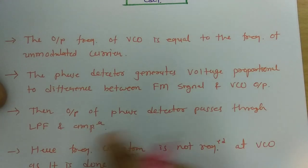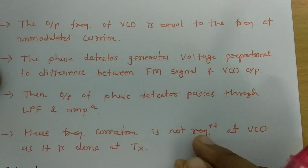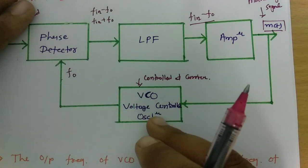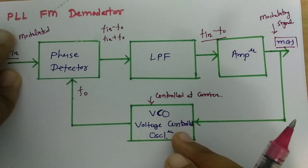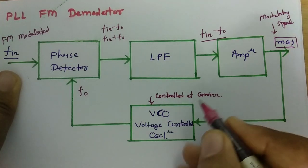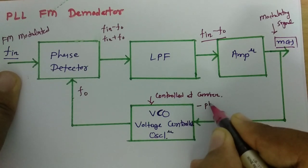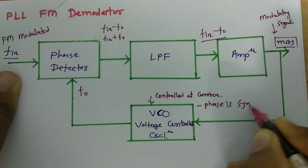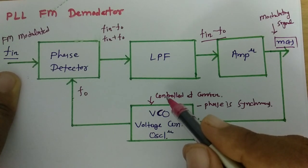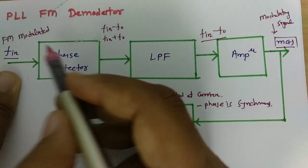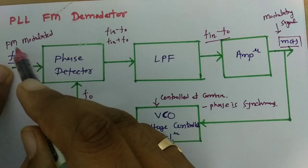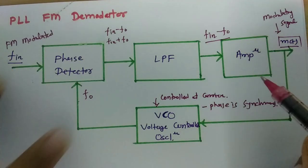The output of the phase detector passes through a low pass filter and amplifier. Frequency correction is not required at the VCO as it is done at the transmitter section. Since the phase lock loop is present, the phase of this signal is properly controlled — the VCO is synchronous with the carrier — and to extract the modulating signal, we take the difference of the carrier frequency component and the input FM modulated signal.